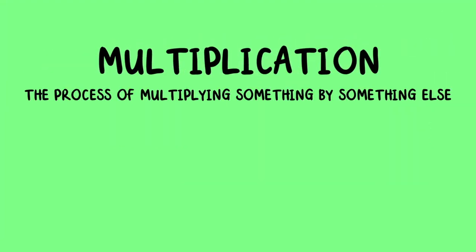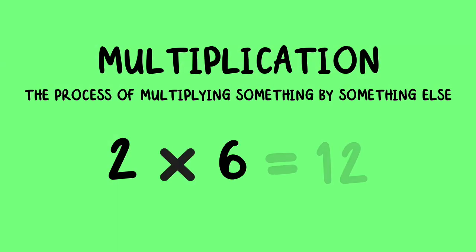Multiplication is the process of multiplying something by something else. For example, multiplying 2 by 6 is 12. It is most often represented by the symbol x, meaning times.